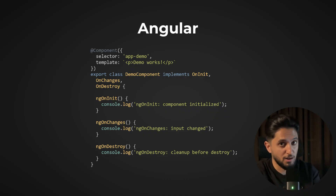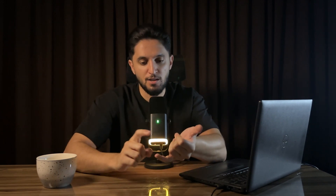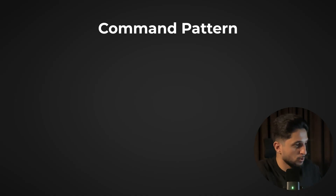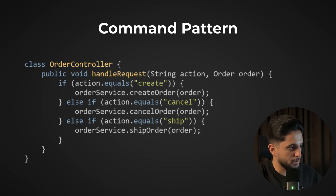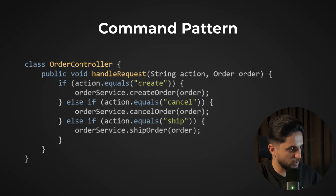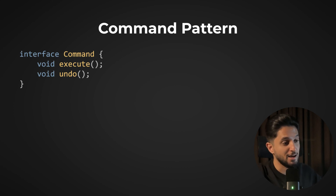Finally, the command pattern decouples actions from their executions, giving you capabilities such as undo/redo, queuing actions, and audit trails. Without the command pattern, you directly couple actions to their execution — for example, an order controller checks if the action equals 'create', 'cancel', or 'ship' and calls the corresponding method directly. With the command pattern, you encapsulate each action as a command object.